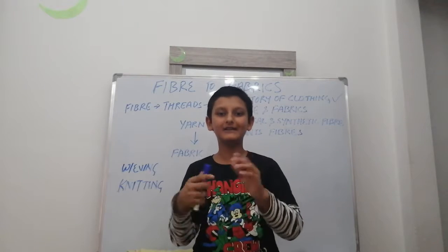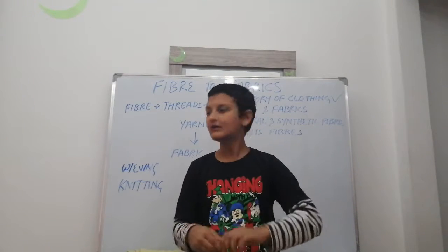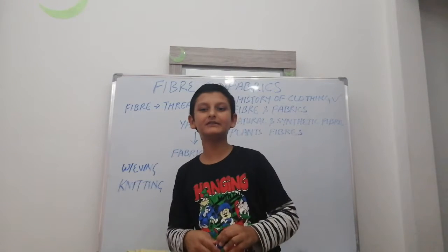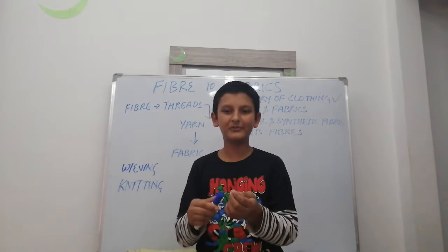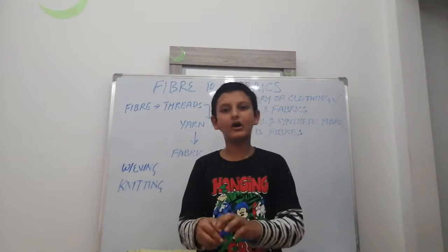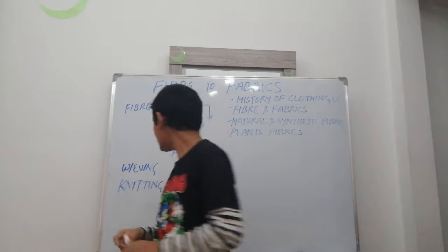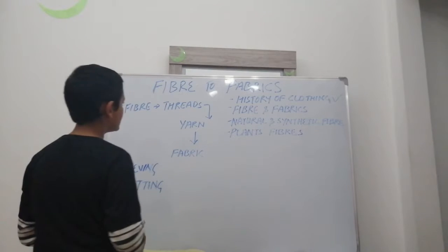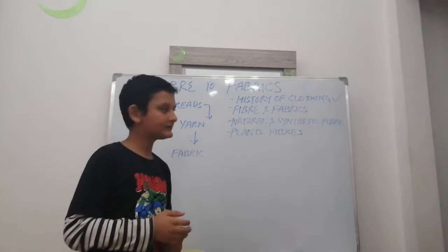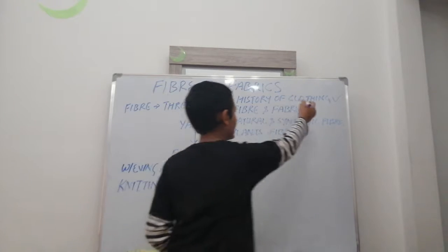Now what is knitting? Knitting is a series of connected loops formed together to make fabric. It is done using knitting needles or by machine. So that covers fiber and fabric — it's quite easy.